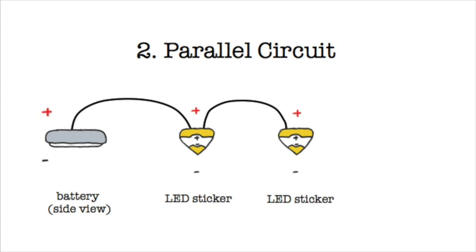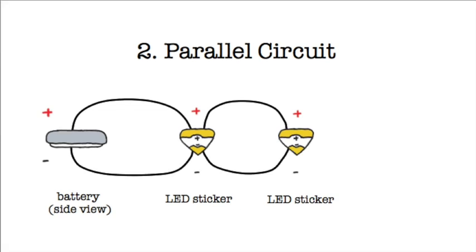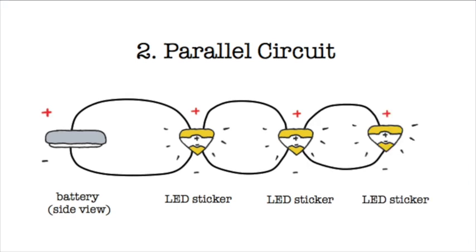Here, connect the positive side of your battery to the plus side of all of your LEDs, and connect the negative side of your battery to the minus side of all of your LEDs. This creates multiple loops that will allow current to flow through all of your lights. You can continue to add more LEDs in parallel. However, they'll become dimmer and dimmer as your battery works harder to power more lights on at once.